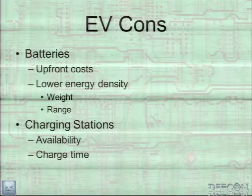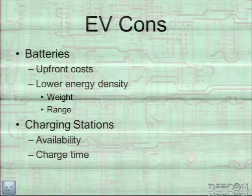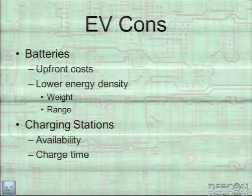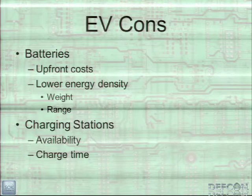The cons, of course, are the batteries — they're very expensive to purchase up front. Newer batteries coming out now will last up to 10 years, so if you build that into the price of the EV, it's not really a big deal. But compared to gas, it is low energy density, so your range is also lower. Charging stations are an issue — there aren't charging stations all over the place, and availability can be a problem. If EV charging spaces are taken by gas vehicles, you can't charge.